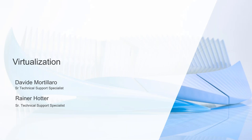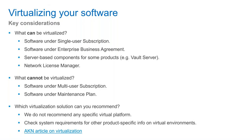The next thing I want to talk about is virtualization — another way you can run your software. Not all products can be virtualized. Virtualization is basically when you have a computer at your office running the software and you're connecting to it remotely. Software that can be virtualized includes single-user subscription software, software under EBAs, server-based components like Vault Server and your network license manager. What cannot be virtualized: multi-user subscription or software under a maintenance plan.